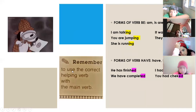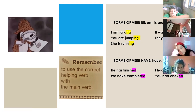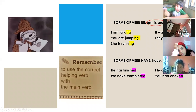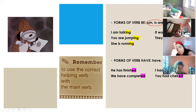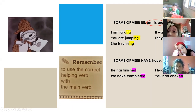Remember to use the correct helping verb with the main verb forms. Forms of 'be' are helping verbs: 'is' and 'are' in the present, 'was' and 'were' in the past. These three are present tense and these two are past tense. The past tense of 'is' is 'was'; the past tense of 'are' is 'were.'